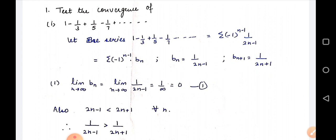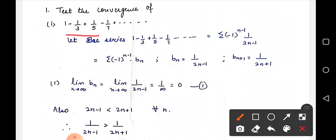First question: 1 minus 1/3 plus 1/5 minus 1/7 and so on. If you see this series, it has alternating signs — plus, minus, plus, minus. So for this alternating sign, we will take (-1)^(n-1).